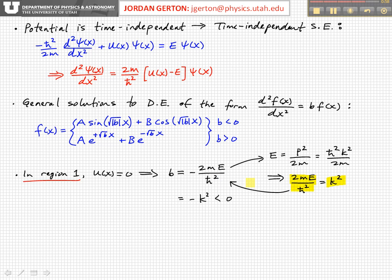Okay, so in this case, this generic b is equal to minus k squared, and again, as we already said, it's negative.